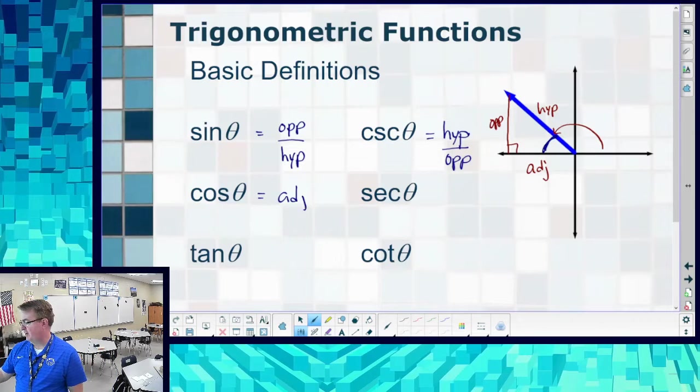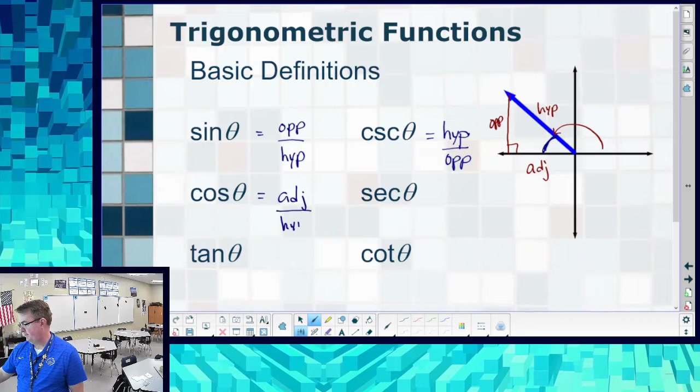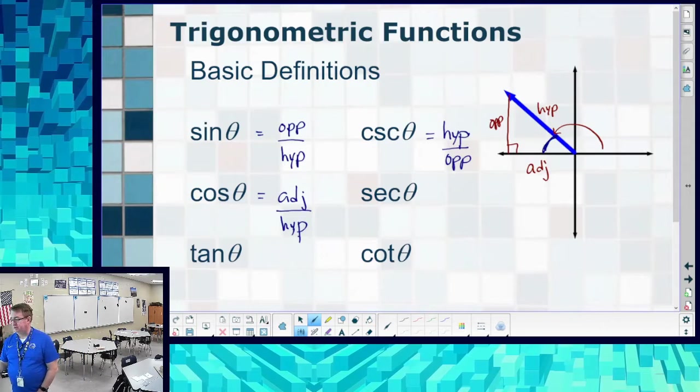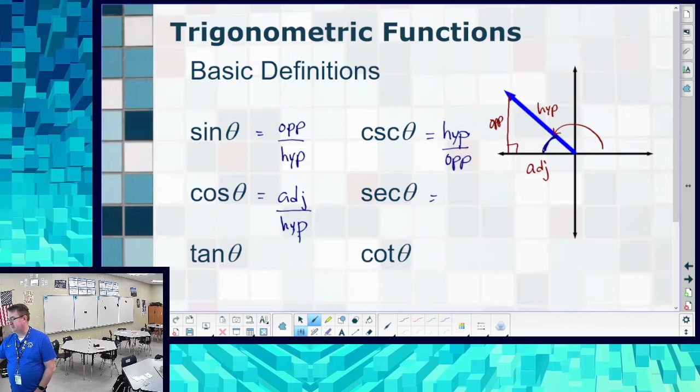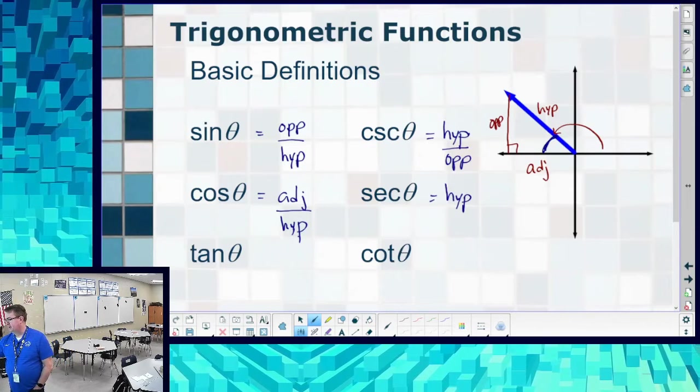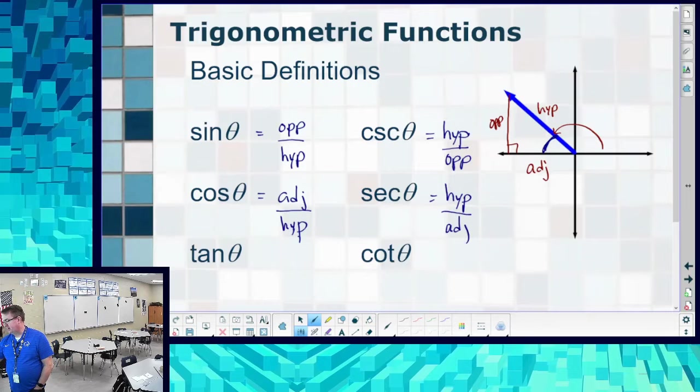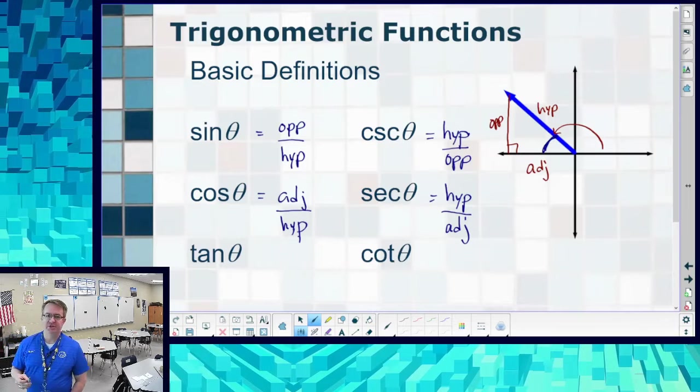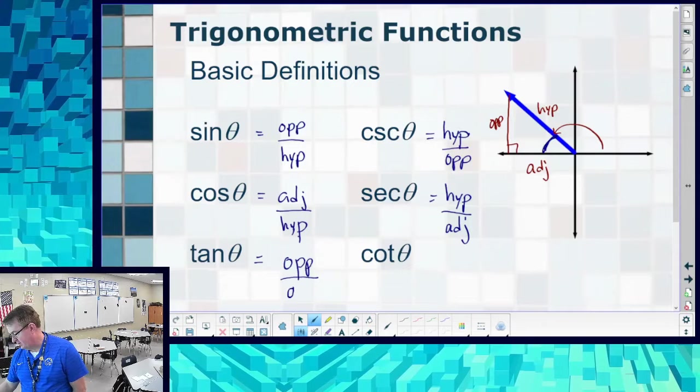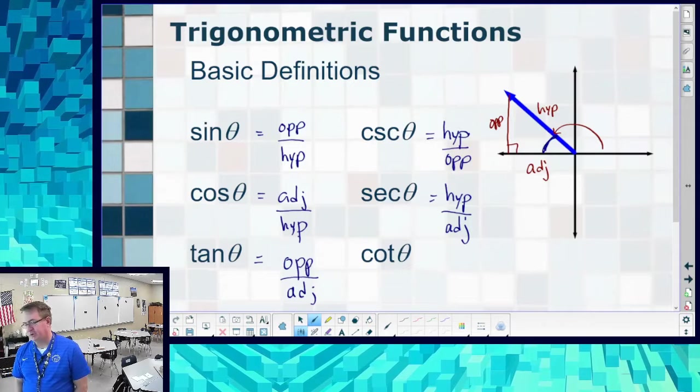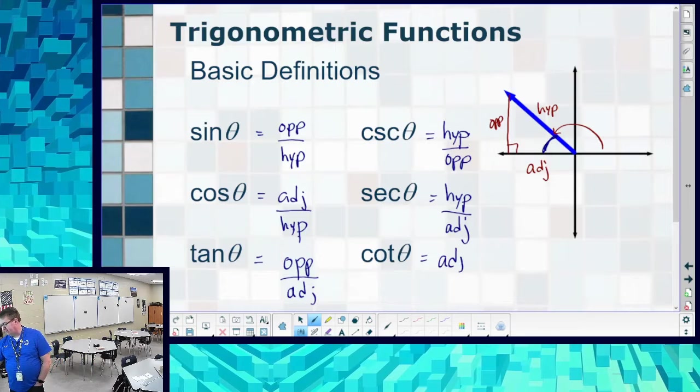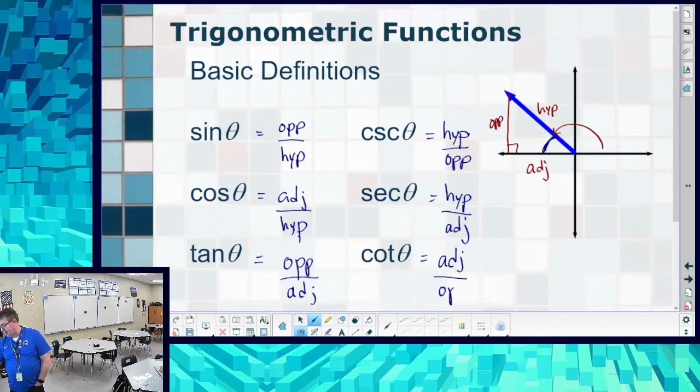Cosine, we have adjacent over hypotenuse. So secant is going to be related to cosine, hypotenuse over the adjacent side. And then tangent, the last combination, opposite over adjacent. So cotangent then has to be the reciprocal of that. And I use the term reciprocal because that's also going to be how these are related.